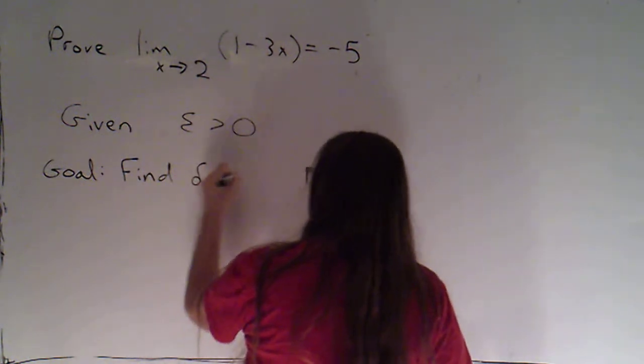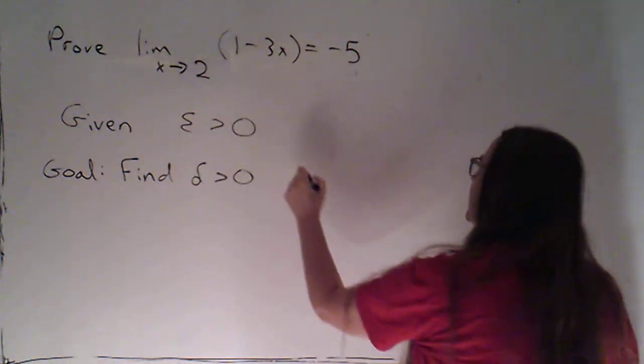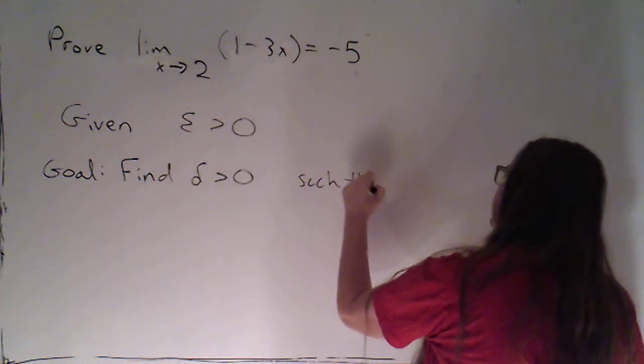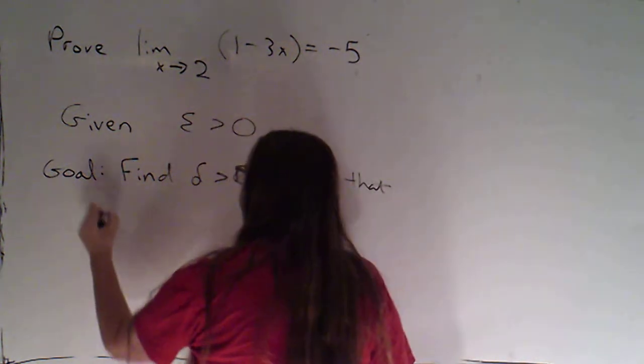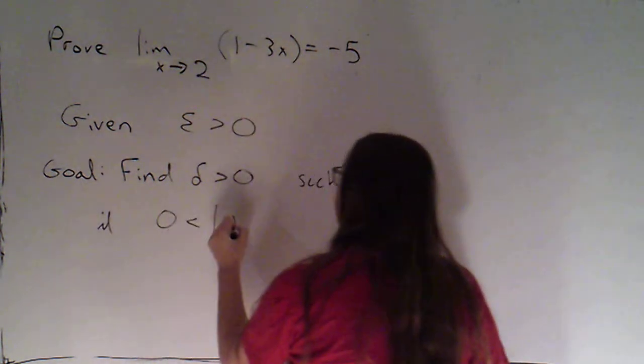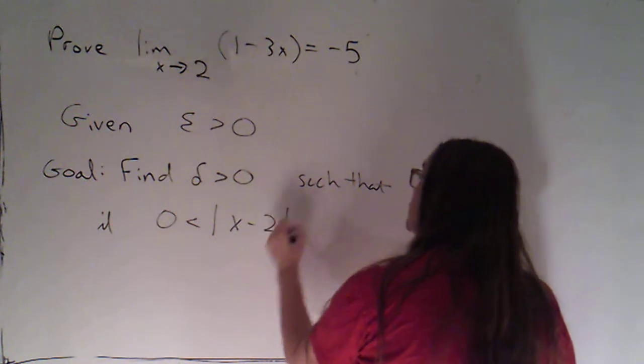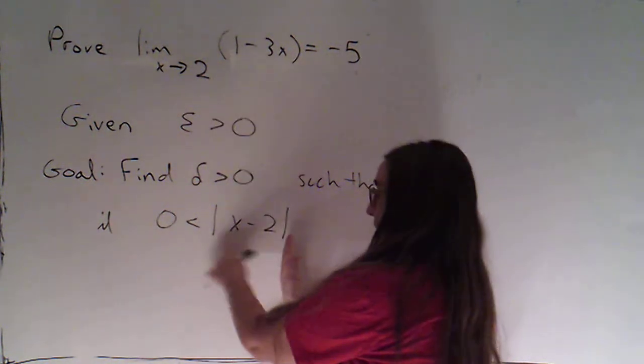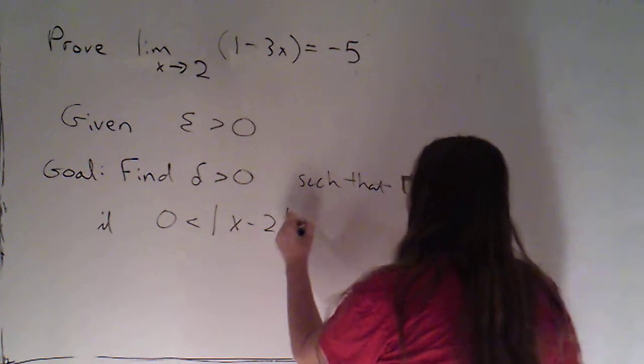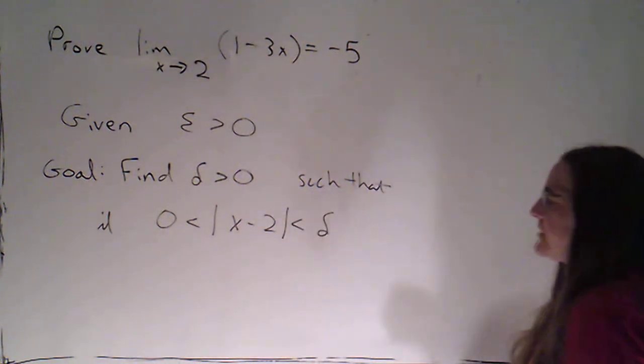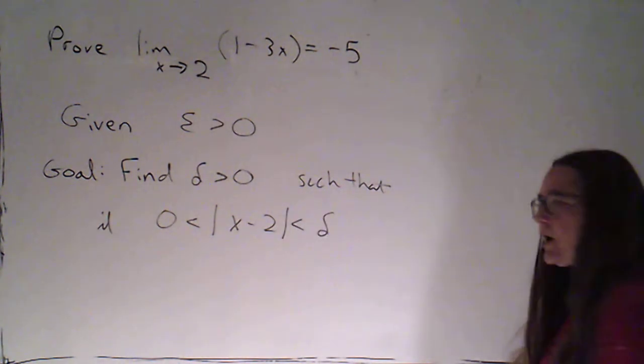So my goal at this point is to find a delta, which will also be a positive number, such that if zero is less than the absolute value of x minus 2—x is approaching 2, so I want here the distance between x and 2—if that distance is between zero and delta,